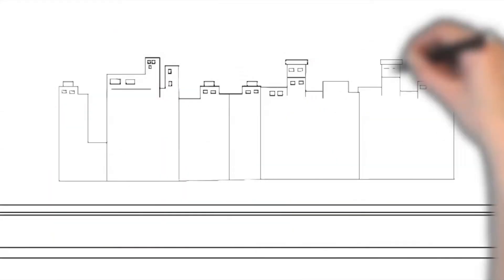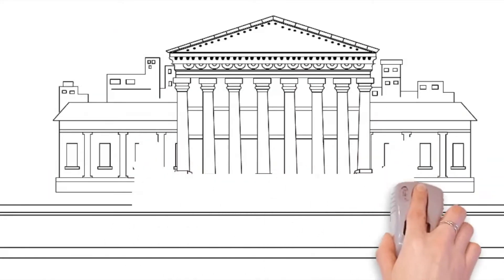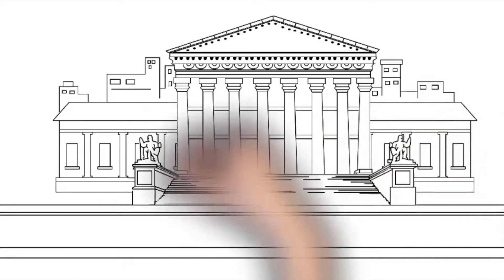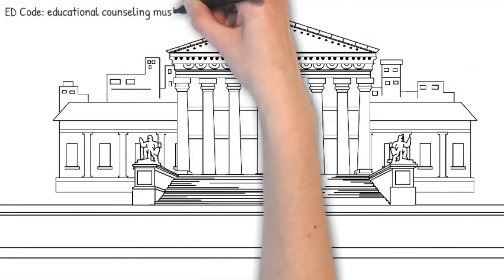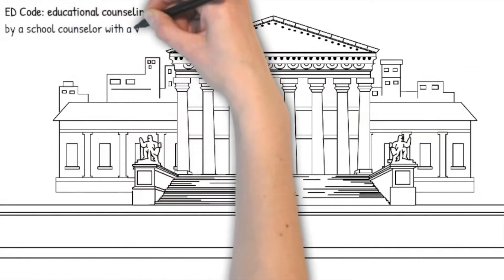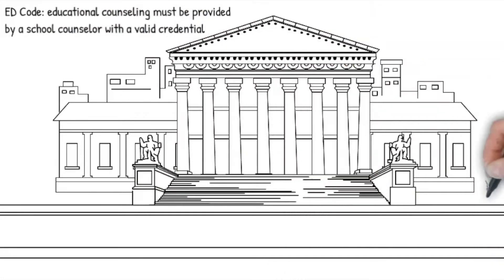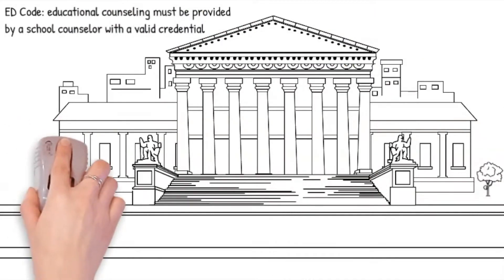California EdCode states educational counseling must be provided by a school counselor with a valid credential. That means all school counselors have a personnel services credential in counseling, making them qualified to address all of your students' social and emotional needs.